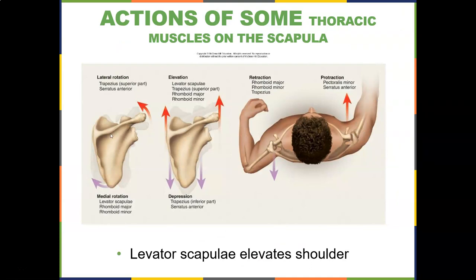Going back to the scapula — lateral rotation is performed by the upper traps and serratus anterior. Medial rotation going the other way is performed by the levators and rhomboids. If you have tightness here, your scapula will remain elevated. Tightness in the upper trap, rhomboids, and levator is very common from poor posture. You really want to work the serratus and the lower traps to get depression and improve posture. Serratus anterior and lower trap are probably two extra really good muscles to target for ideal posture. For retraction: rhomboid major and minor. For protraction: pec minor and serratus anterior.